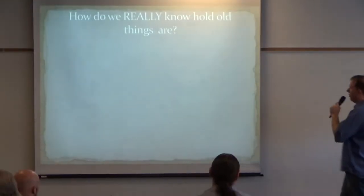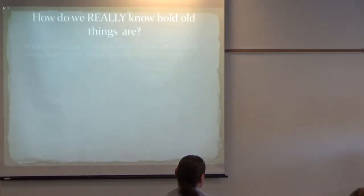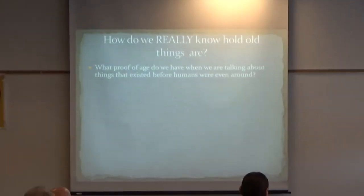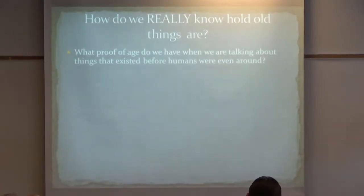Because without really very long timescales that are completely beyond human understanding and perception, the whole theory falls apart. So, as our first talk today, we're going to show you some of the methods that we use to show that the Earth really is 4.6 billion years old. So, how do we really know how old things are? And what proof do we have when we're talking about things that existed before humans were even around?